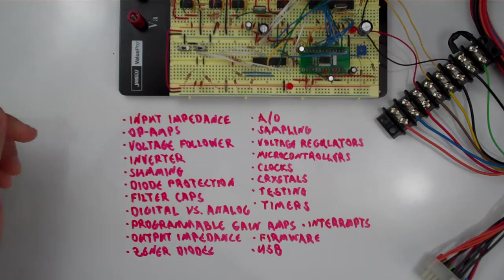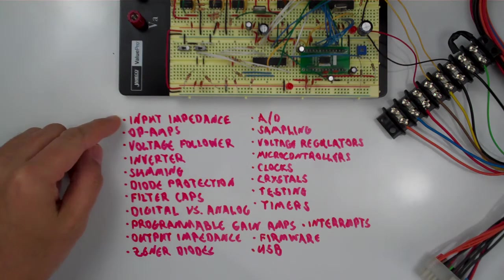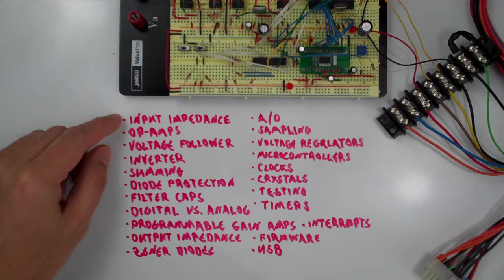One of the things that we're going to be talking about is input impedance. A lot of simple oscilloscope projects, open source oscilloscope projects, will have a low input impedance. And this particular project has a very high input impedance. And we'll get into why that's important and how it affects the project.